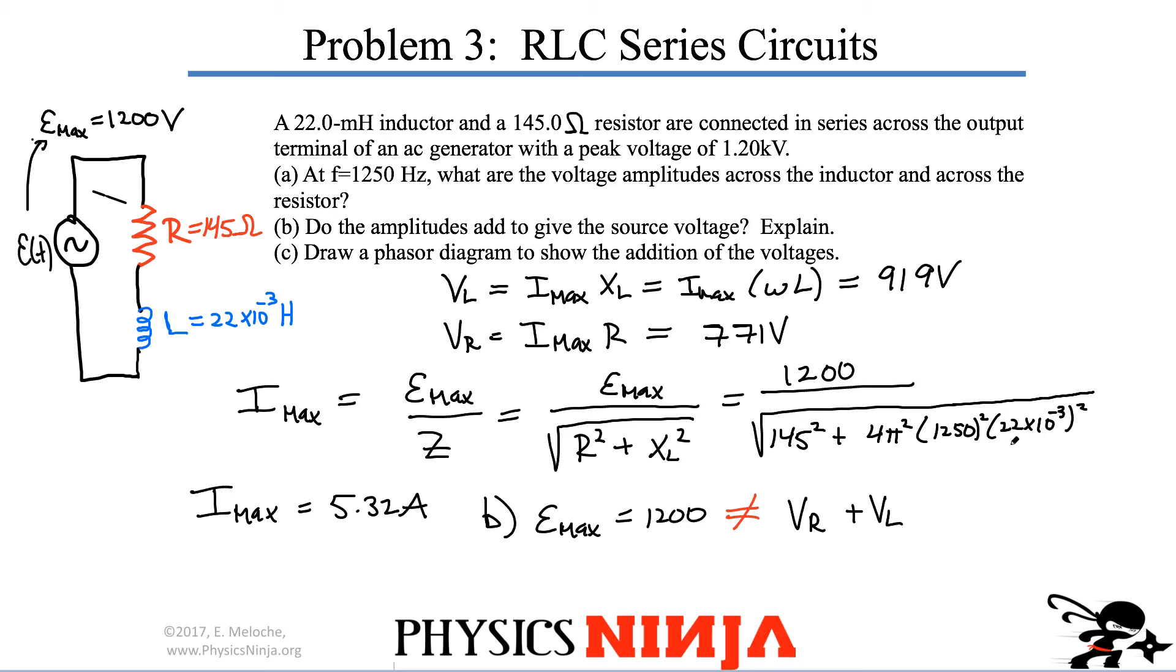So at the end, if you want to do a phasor diagram, let's just do it down here at the bottom. The phasor diagram will have a voltage of the resistor along this axis, and that voltage is VR. We calculated it, it's 771 volts. And we also have a voltage across the inductor. Voltages across the inductor are 90 degrees ahead of the voltage across the resistor, and that voltage is 919.